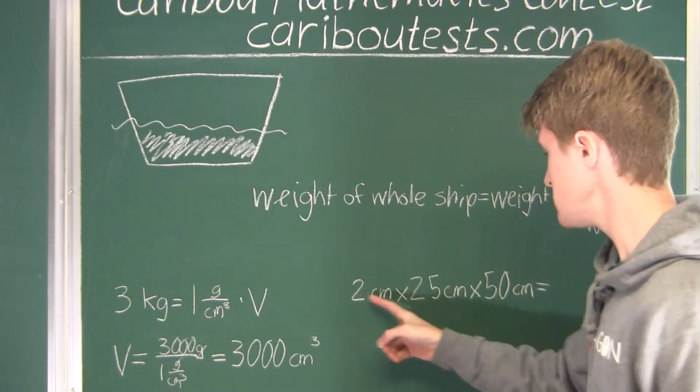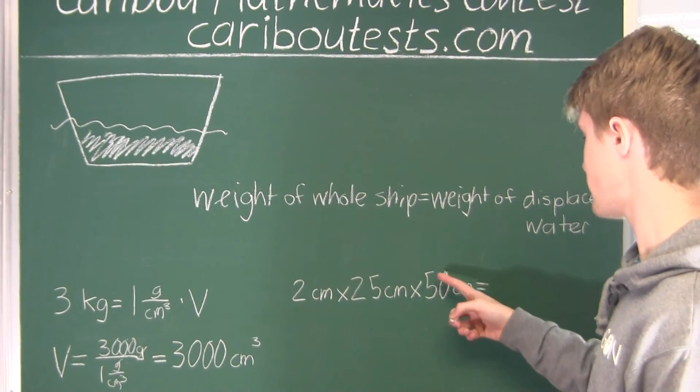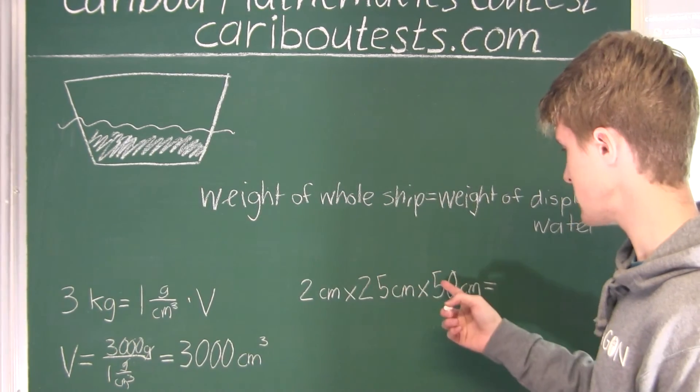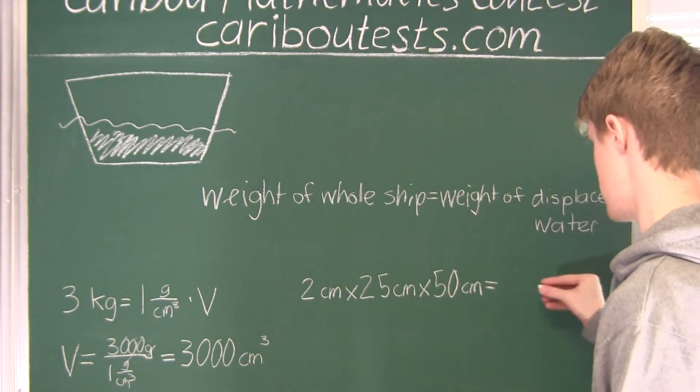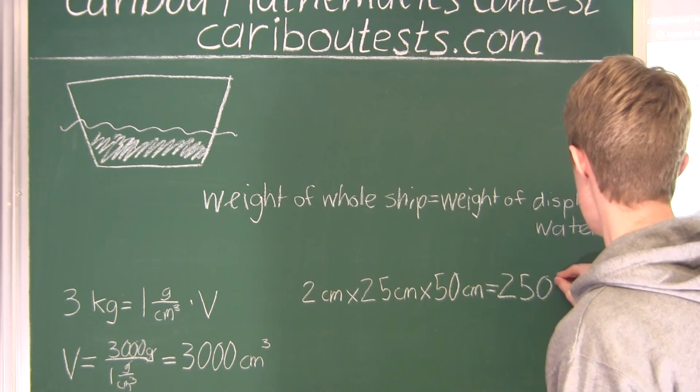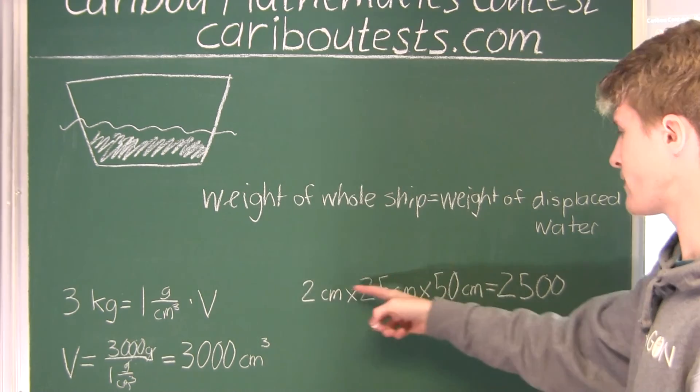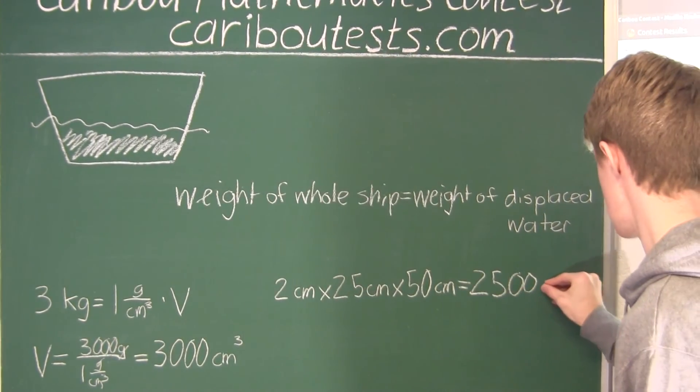So 2 times 25 is 50, and 50 times 50 is 2,500, and that's easy because 5 times 5 is 25 with the two zeros. So we have 2,500, and cm × cm × cm, there's three factors of that, so it must be cm³.